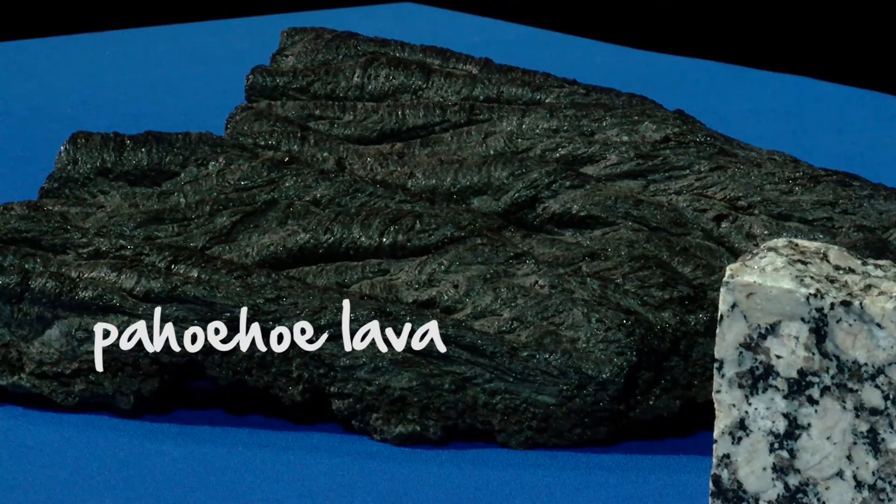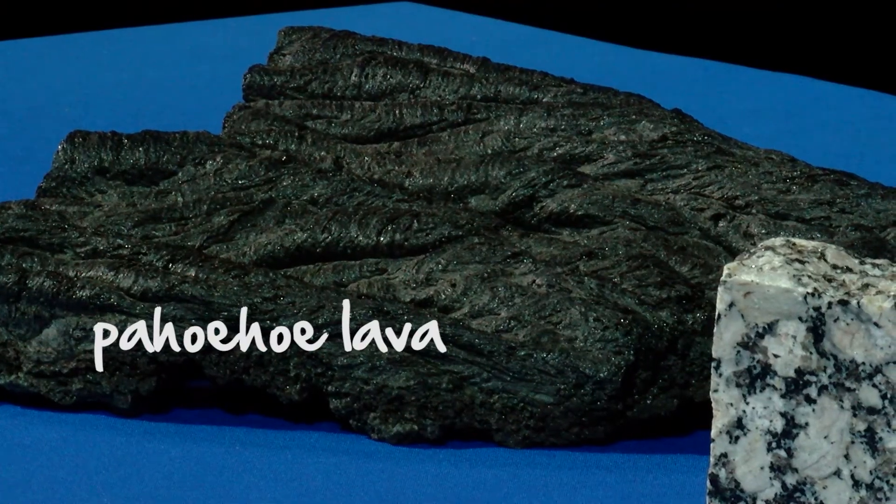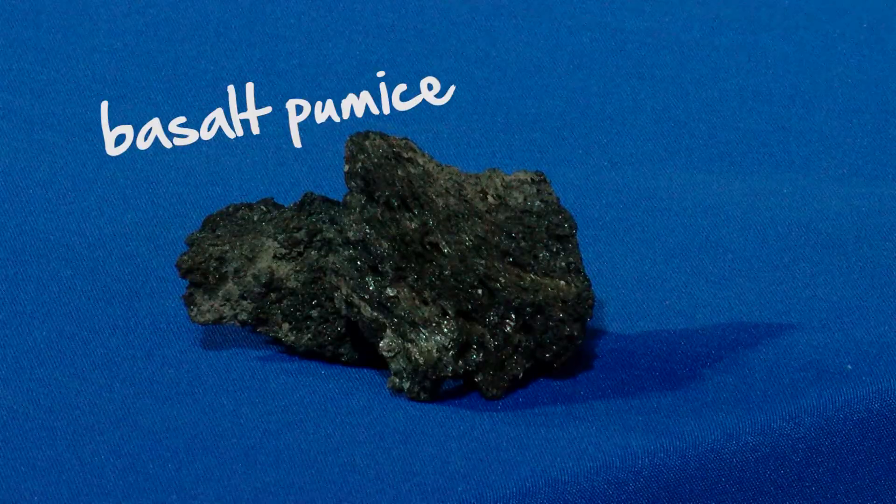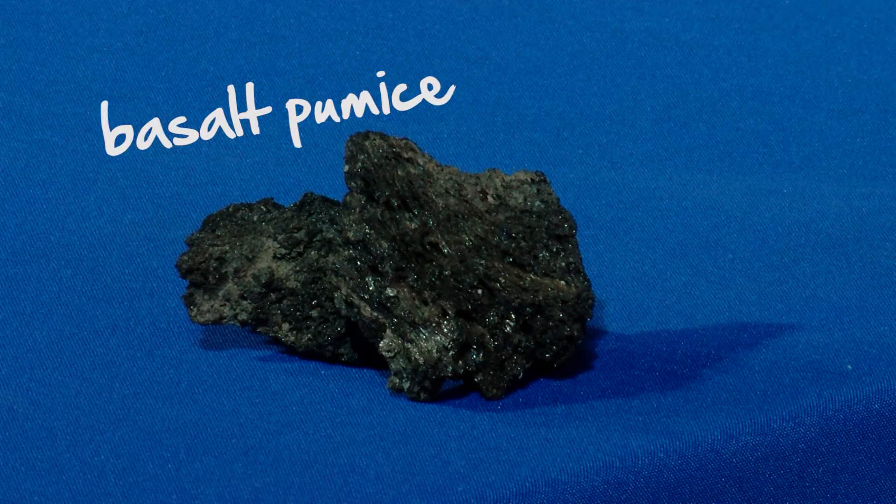The other type of igneous rock we have up here are basalt, lava, and pumice. We see that right here with the Pahoehoe lava, and right here with a couple of pieces of basalt pumice or basalt scoria.